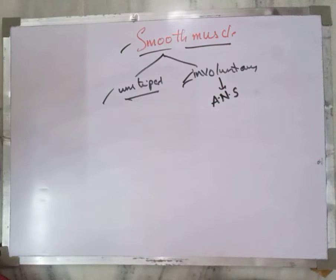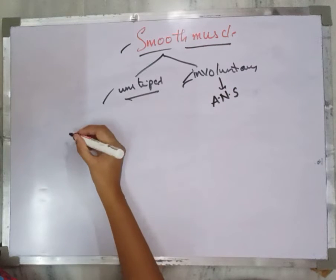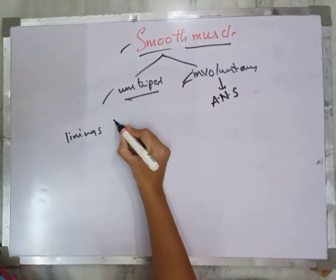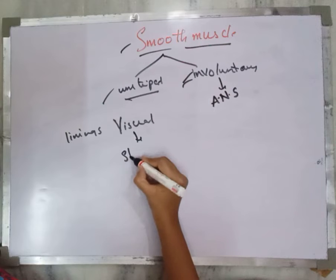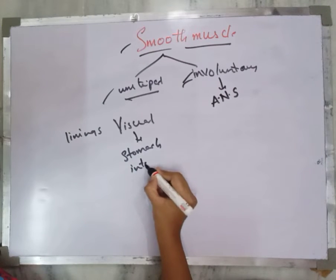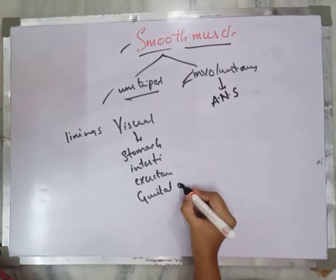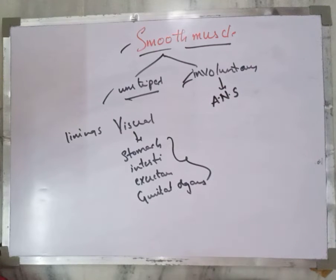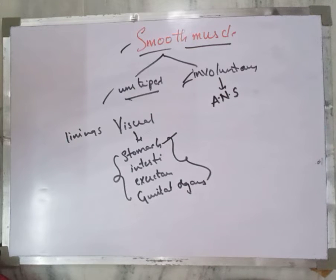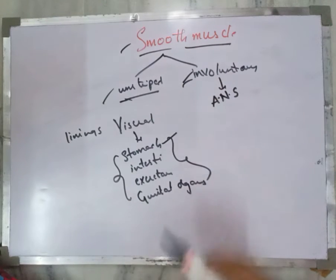Smooth muscle works under the control of the autonomous nervous system, which controls its contraction and relaxation. Smooth muscle is found on the linings or in connection with visceral organs such as the stomach, intestine, spine, excretory organs, and genital organs. It is responsible for the contractions of these visceral organs — for example, the movement of food through the stomach and intestines.